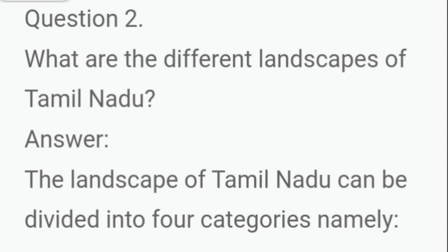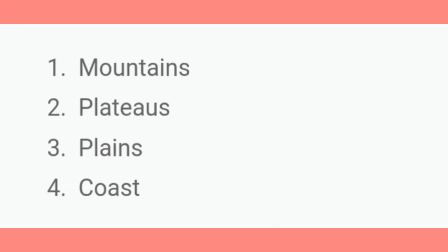Question 2: What are the different landscapes of Tamil Nadu? The landscapes of Tamil Nadu can be divided into four categories. Answer: First - Mountains, Second - Plateaus, Third - Plains, Fourth - Coast.